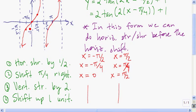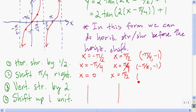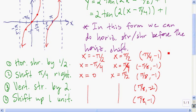Now go to the point negative pi over 4, negative 1. A horizontal shrink by 1 half multiplies the x-coordinate by 1 half, giving negative pi over 8, negative 1. Then we shift pi over 4 right: negative pi over 8 plus 2 pi over 8 equals pi over 8. Then we do a vertical stretch by 2, multiplying the y-value by 2, and shift up 1 unit. Press pause while you work on the remaining two points: 0, 0 and pi over 4, 1.